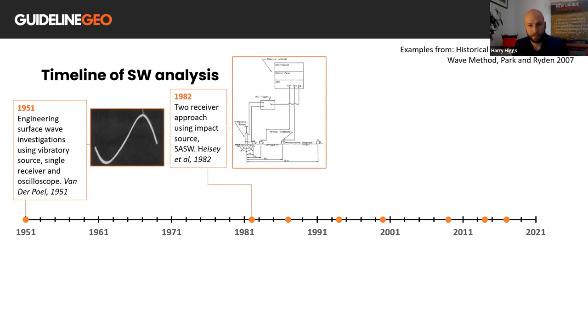In 1982, researchers introduced a two-receiver approach, which would later be known as the spectral analysis of surface waves. Innovations in microprocessing and the fast Fourier transform algorithm allowed for frequency spectrum analysis as a quick and easy way to evaluate the propagation of elastic waves through layered media.